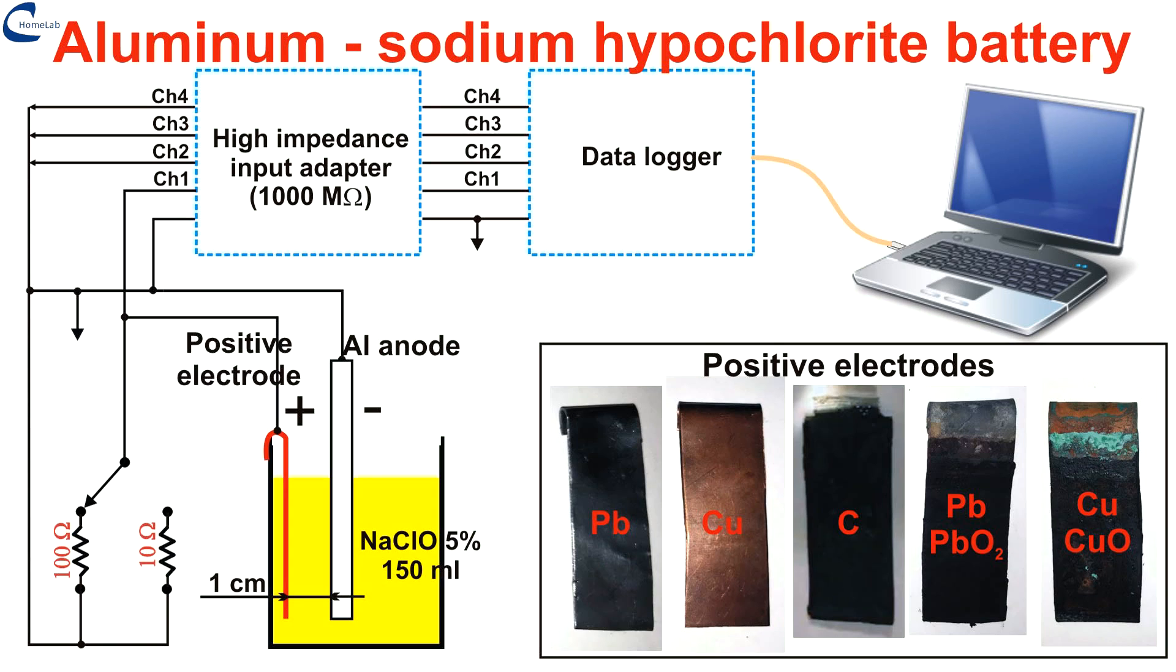With this type of cell, output voltages and current densities are obtained clearly higher than those obtained with aluminum air cells, which suffer from major problems due to parasitic reactions.